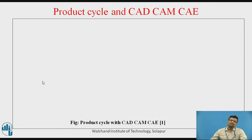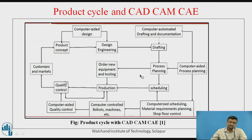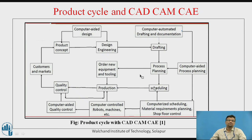With the help of the product cycle and CAD-CAM CAE, in the product concept and design stage we can use computer-aided design; for drafting we can use computer-aided drafting and documentation; for process planning we can use computer-aided process planning; in scheduling we can use computer-aided scheduling; for production we can have computer-controlled machine tools, robots, ASRS, and AGV; and for quality control we can have computer-aided quality control.